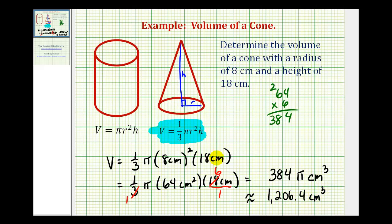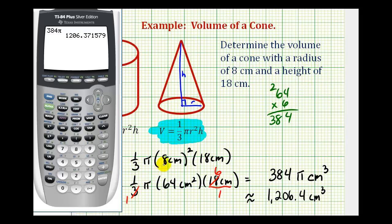But now to verify that we did simplify this correctly, let's go back to the calculator and enter in one-third pi times 8 squared times 18.